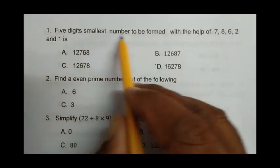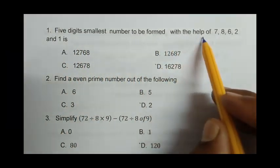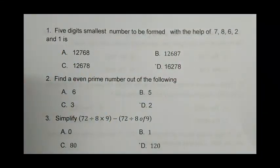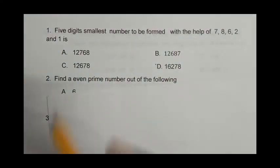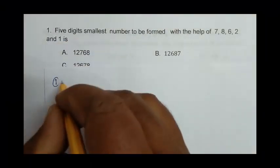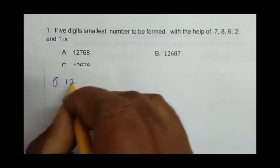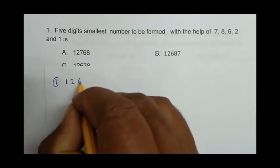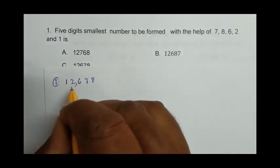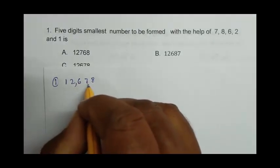Question number 1: Five digit smallest number to be formed with the help of 7, 8, 6, 2, and 1 is. We have to write the 5-digit smallest number, so we write the smallest digit first. That is 1, after that 2, after that 6, after that 7, after that 8. So the number is 12,678.